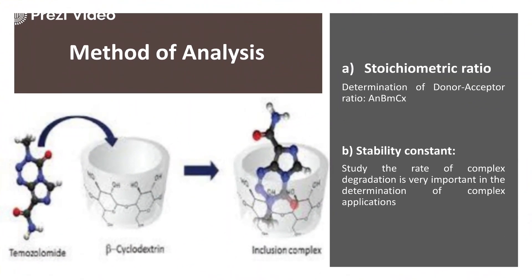When we talk about the method of analyzing whether there is a formation of a complex or not, it can be done by two ways. The first is the Stoichiometric Ratio, which basically determines the donor-acceptor ratio. In our case, the substrate is the acceptor and the ligand is the donor. This donor-acceptor ratio and its properties can help us determine the formation of the complex. The second is the Stability Constant - by measuring the stability constant and studying the rate of complex degradation, we can analyze and determine the presence of the complex.